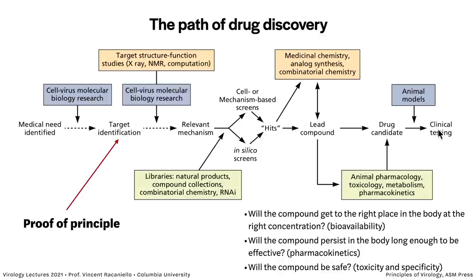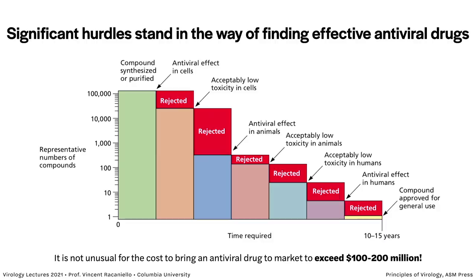You make a number of hits, modify them for better activity into lead compounds, and advance them to a drug candidate. You test in animals, then advance to clinical testing in humans. Properties you want to address in later stages include bioavailability — if taken by mouth, does it go to the right place at the right concentration and persist long enough? Also pharmacokinetics, safety, toxicity, and specificity. All of this must be sorted out before going into people, including toxicity studies in animals.